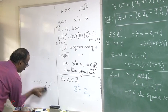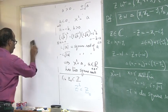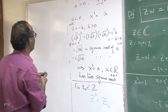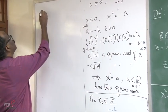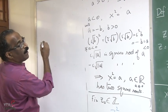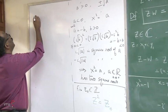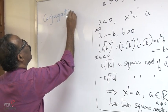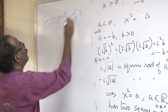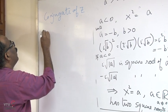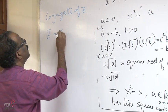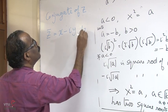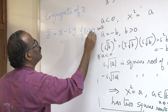One more important property: the conjugate of z. Define the conjugate of z, denoted z̄, as z̄ = x − iy when z = x + iy. So you have this notation where z̄ differs from z only in the sign of the imaginary part.